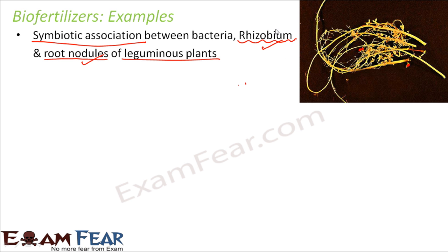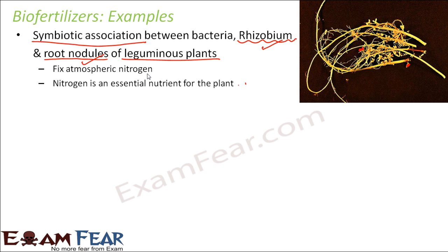The plant benefits because Rhizobium helps fix atmospheric nitrogen into the soil. Nitrogen is a very important nutrient for plants, so the plant allows Rhizobium to stay in its root nodules in exchange for this nitrogen supply. The bacteria's advantage is that it gets food and shelter from the plant. Because Rhizobium increases the nitrogen content in the soil, it acts as a bio fertilizer by improving the nutrient quality of the soil.